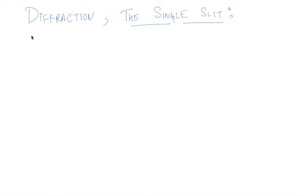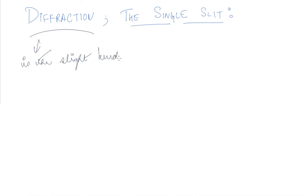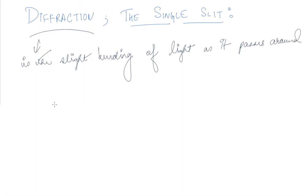In this topic we will have a discussion on diffraction and the single slit experiment. Diffraction is the slight bending of light as it passes around the edge of an object. The amount of bending depends on the relative size of the wavelength of light to the size of the opening.